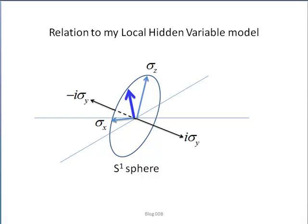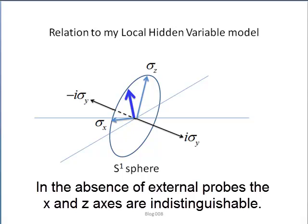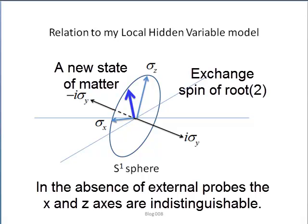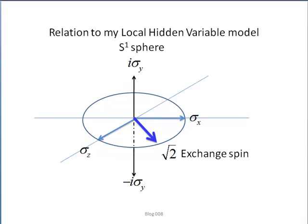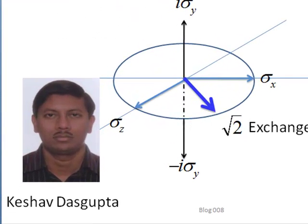These are exactly my two-dimensional spins in that 2D plane. When no interactions are present, the two components of angular momentum are indistinguishable, and this produces the new state of matter — the exchange spin of root two. This relates my sub-quantum local hidden variable theory to Christian's, and is consistent with Girds' conclusion that classical probabilities work. Let's just rotate them again.